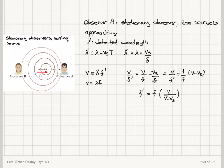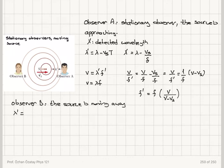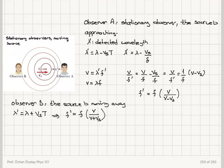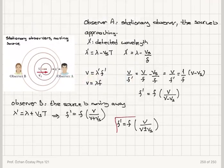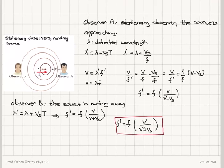The frequency has increased — it is blue shifted. For observer B, the source is moving away, so the wavelength increases: lambda plus v_source times T. The detected frequency becomes v divided by (v plus v_source) times f, meaning the detected frequency has decreased for observer B. To summarize: f prime equals f times v over (v plus or minus v_source) — plus if the source is moving away, minus if the source is approaching.